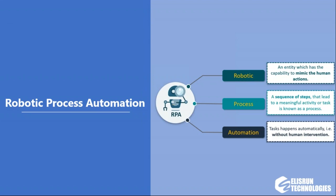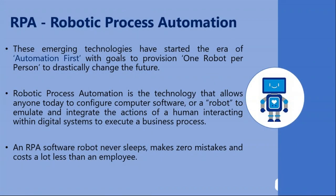Let me give you a background on RPA. The word 'Robotic' refers to an entity capable of mimicking human actions. 'Process' is a sequence of steps leading to a meaningful activity or task. 'Automation' means a task happens automatically without human intervention. Summarizing all of this, RPA is a technology that allows anyone to configure a robot to emulate and integrate the actions of humans with digital systems. Once I showcase the demo, you'll get a clearer understanding.